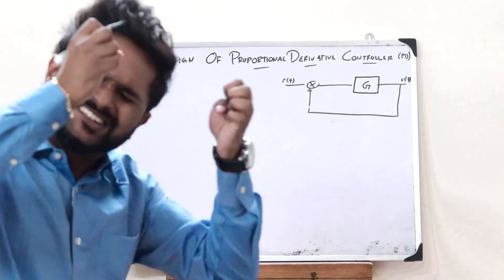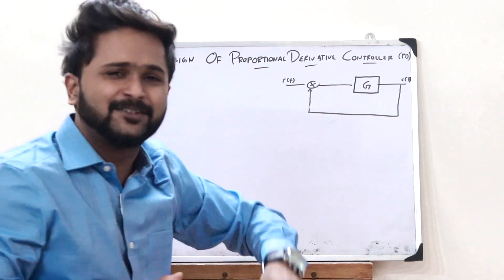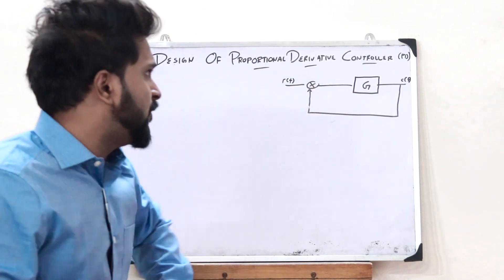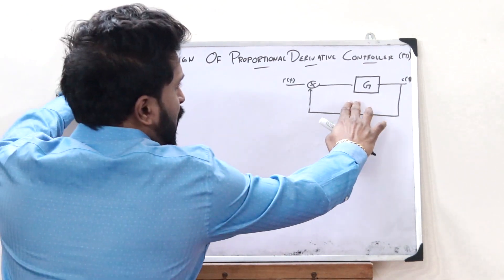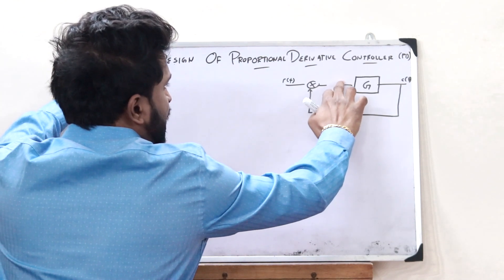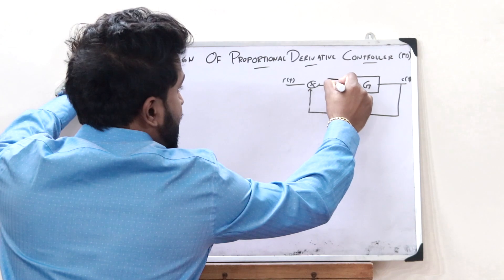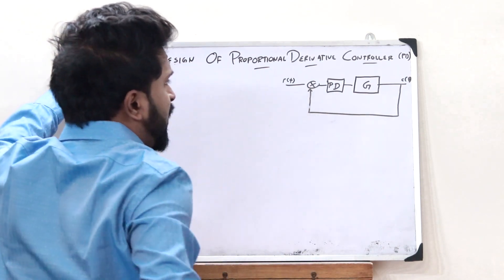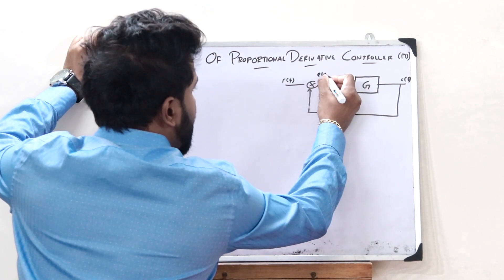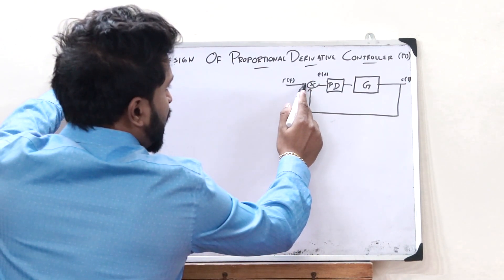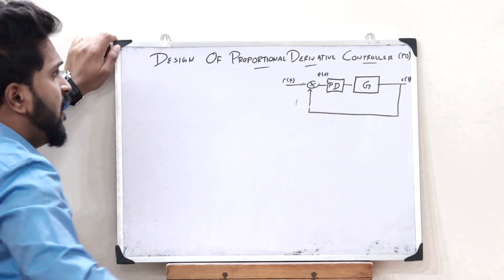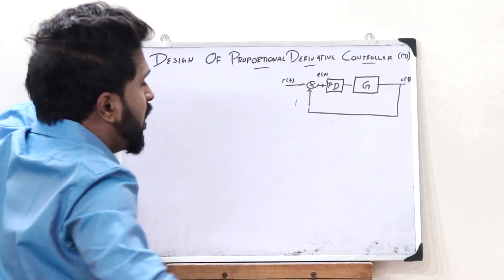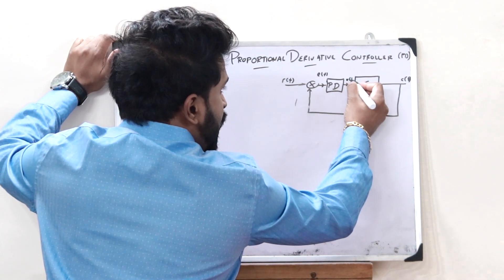If we simply just want to increase the stability of this system without causing any change in the steady state error of this particular system, that is when we simply use the proportional derivative controller. For that, before this particular forward loop gain over here, we would provide a particular PD or a proportional derivative controller. The input to this particular proportional derivative controller is the error signal E of T, which is the sum or the difference between the signal R of T and the negative feedback signal.